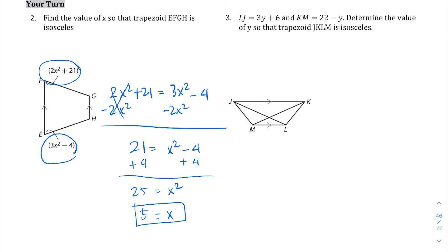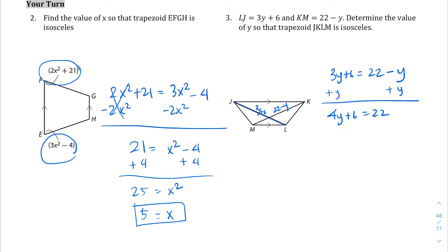Question number 3: we are told LJ is 3y + 6, and KM is 22 − y, and those diagonals are equal. So 3y + 6 = 22 − y. Add y to both sides: 4y + 6 = 22. Subtract 6 from both sides: 4y = 16. Divide by 4: y = 4.